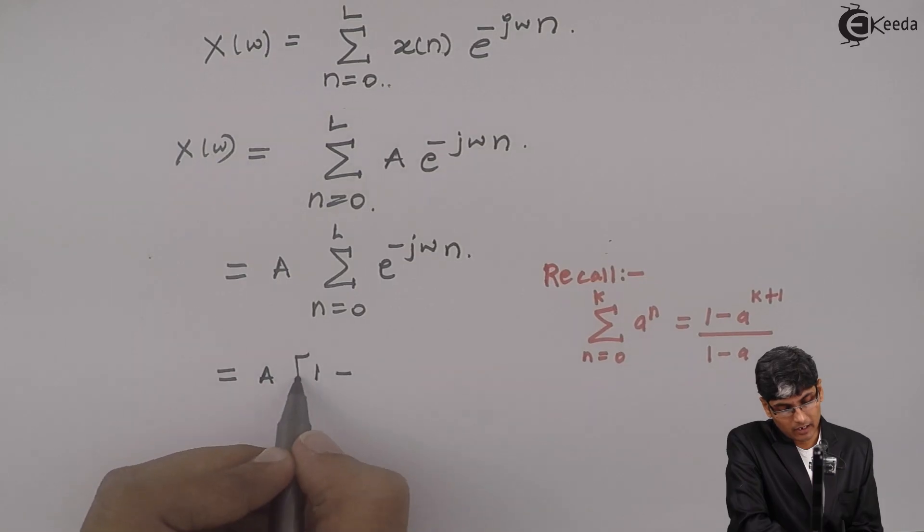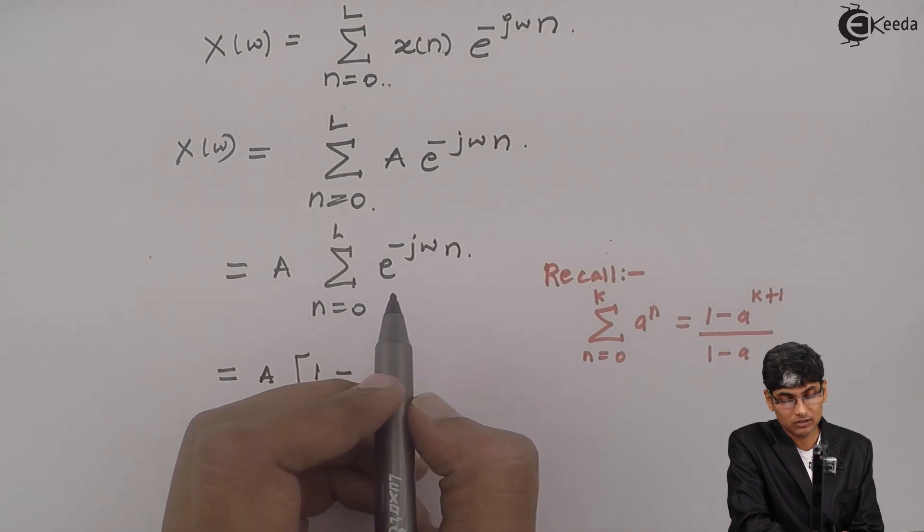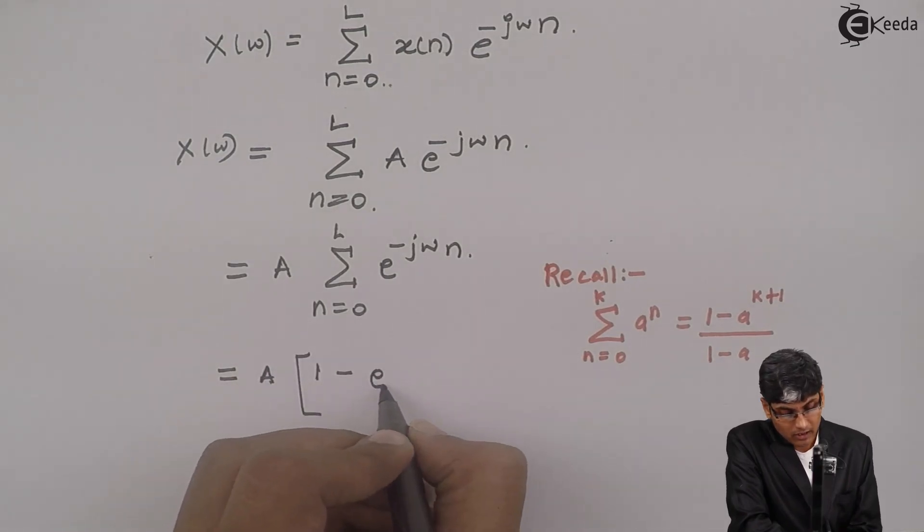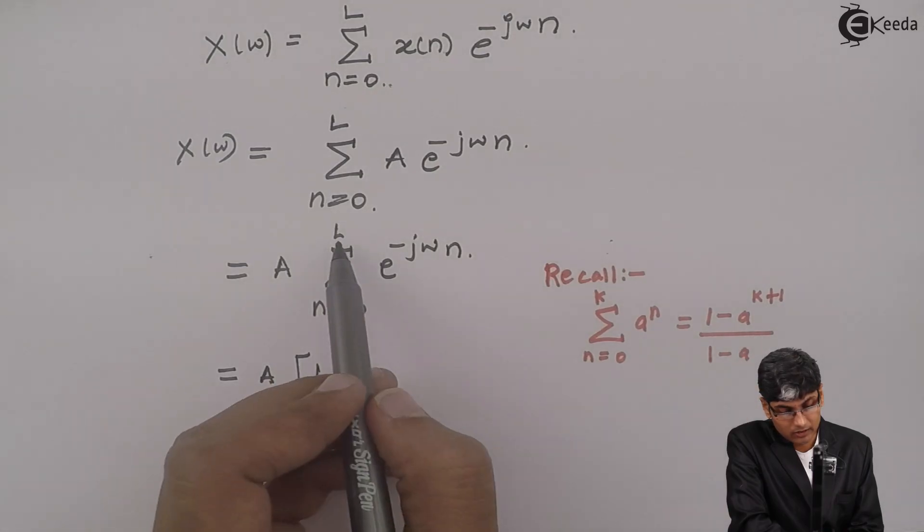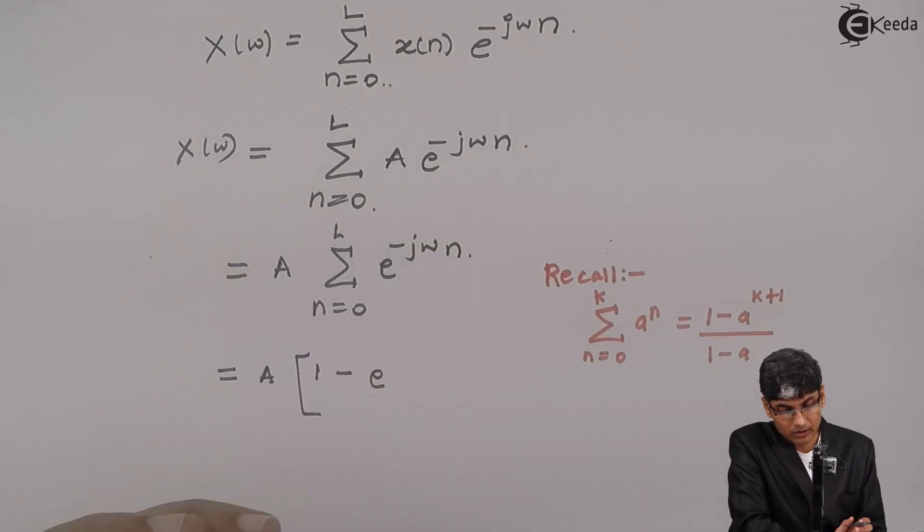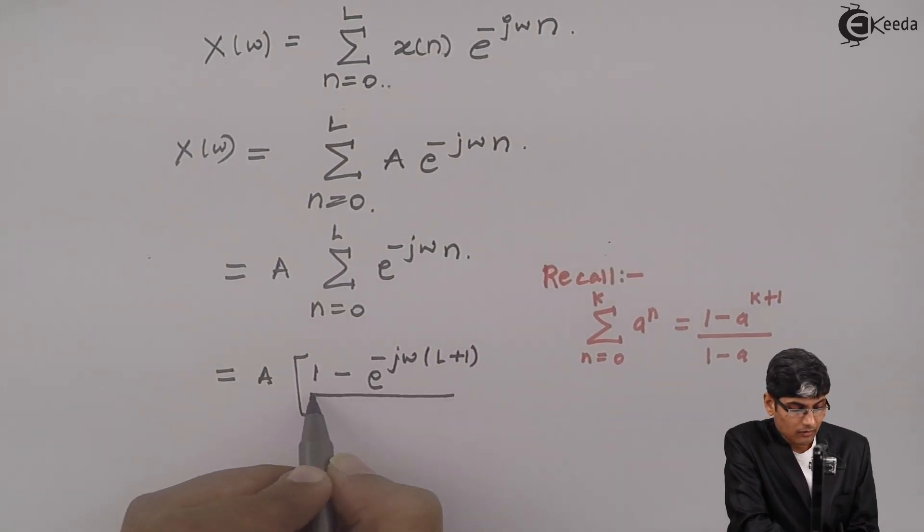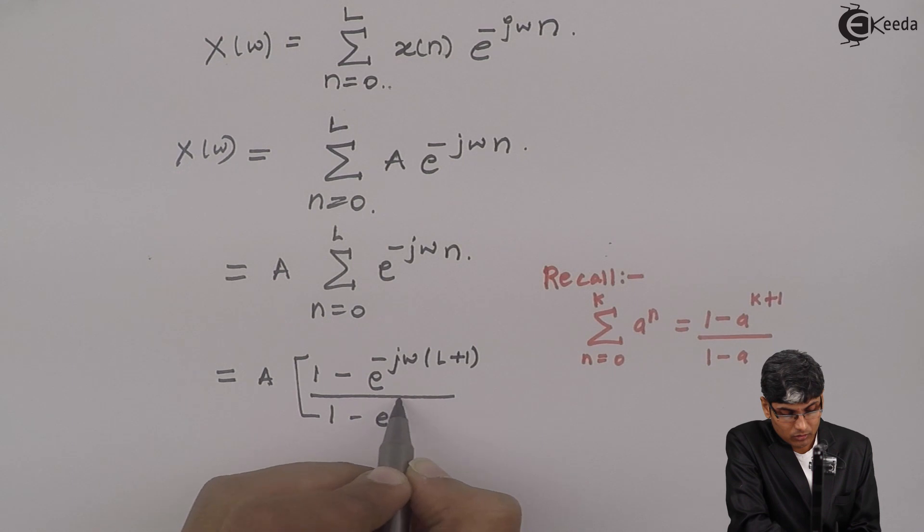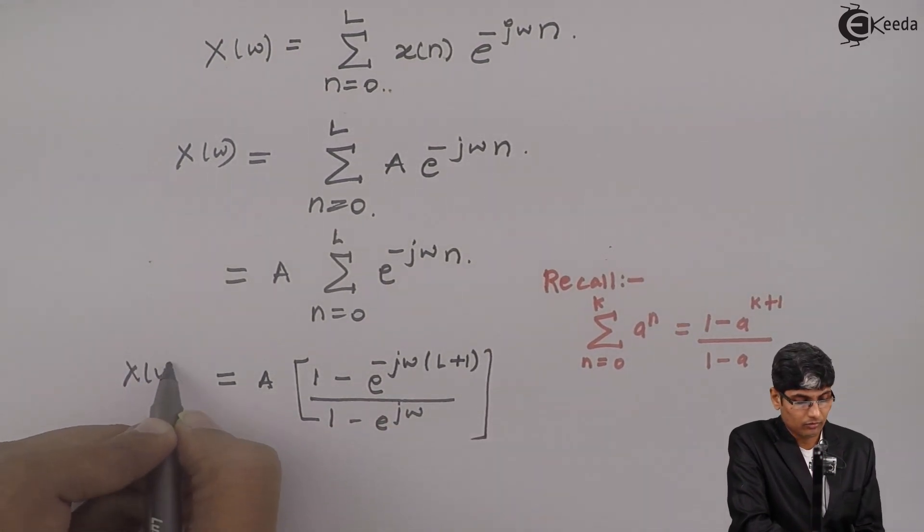So I will get A times [1 - e^(-jω(L+1))]/(1 - e^(-jω)). This is my X(ω).